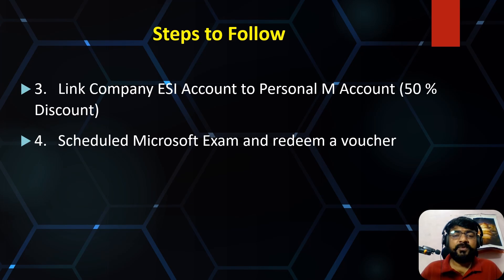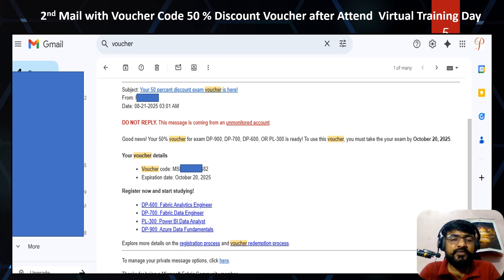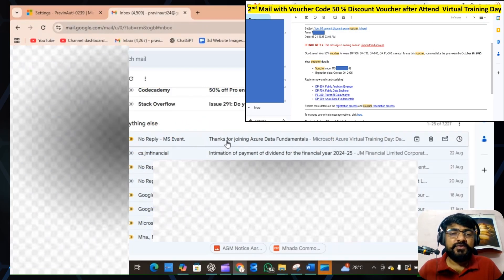Step four: schedule the Microsoft exam by redeeming the voucher. Once you complete the two-day Virtual Training Day program, you will receive a second email containing the voucher code. That voucher code gives you 50% discount on Microsoft certification. Check your spam folder if you don't see it in your inbox. Note the expiration date — you must schedule your exam before the voucher expires. Check which certifications you are eligible for.